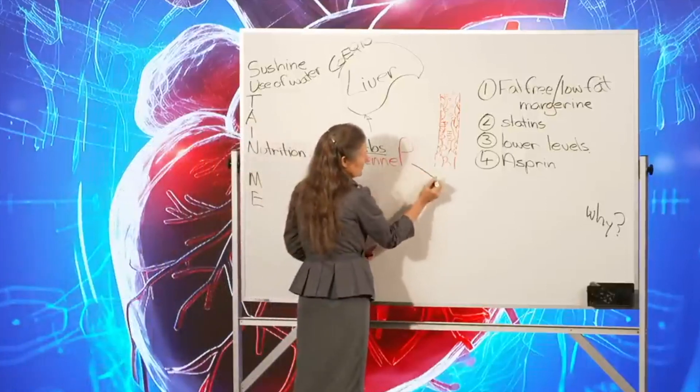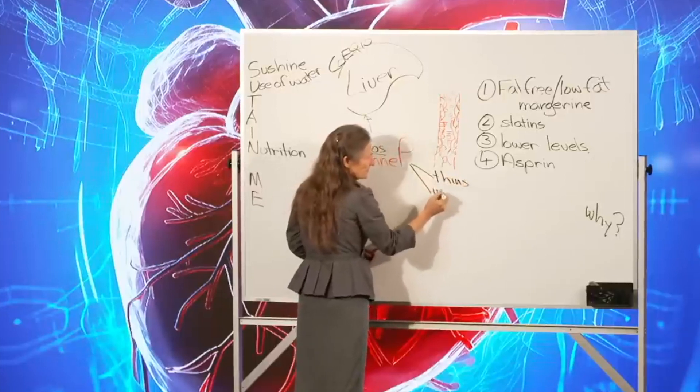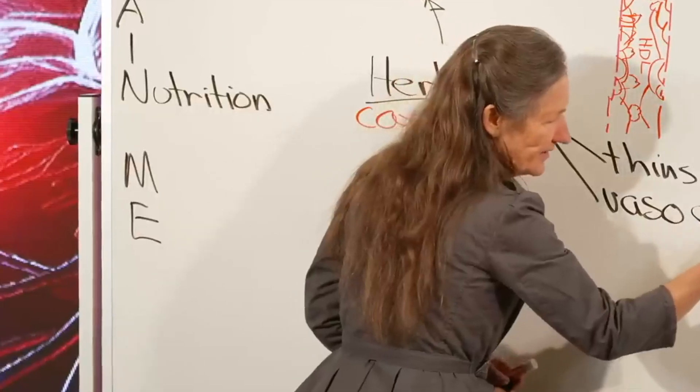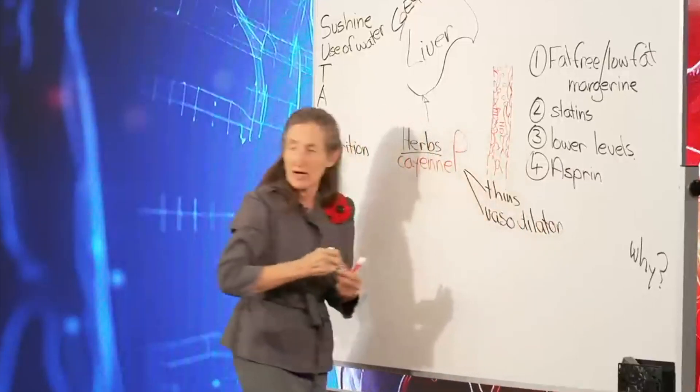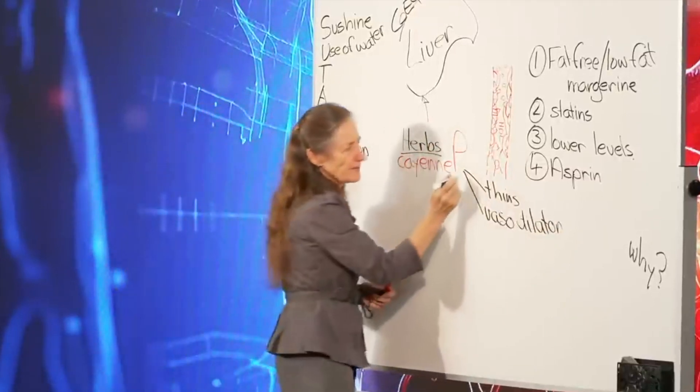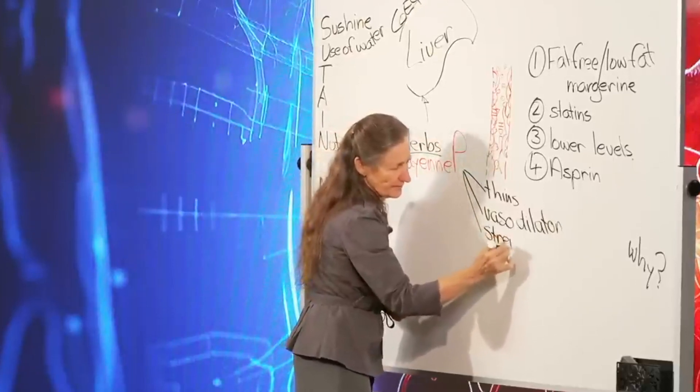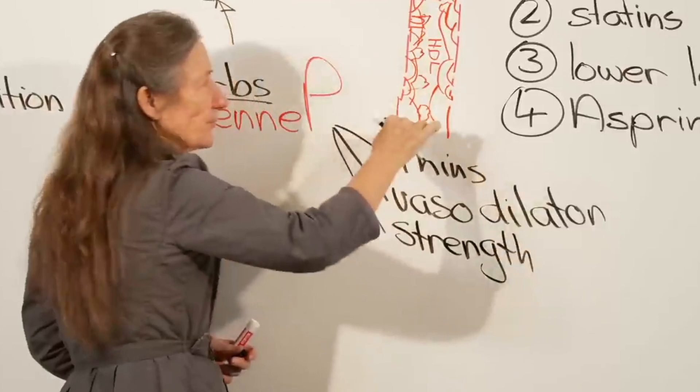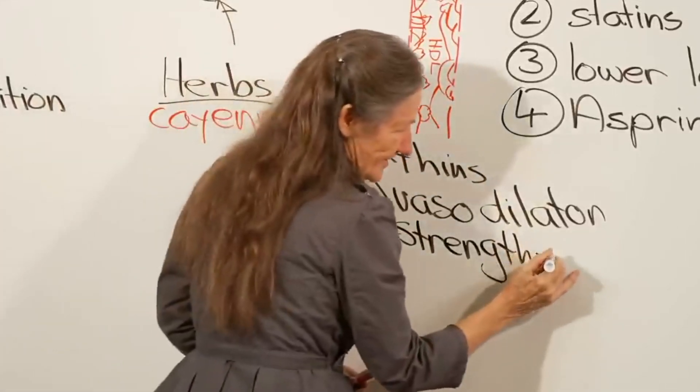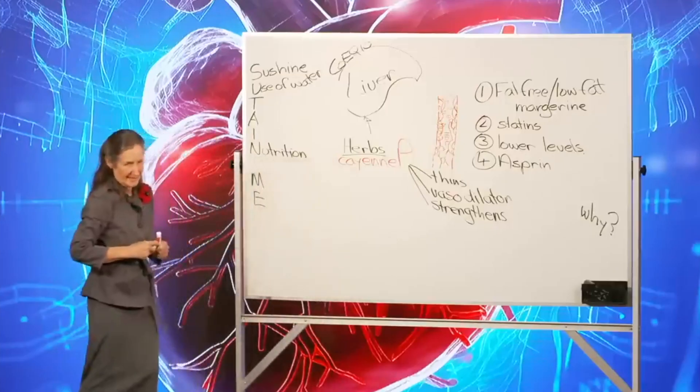I said, I would take two capsules, three times a day, of cayenne pepper. Because what cayenne pepper does is it thins the blood. Cayenne pepper also acts as a vasodilator. What's a vasodilator? A vasodilator dilates or opens the blood capillaries. And cayenne pepper also strengthens the arterial wall, which means it can help to clear out all of this debris. Isn't that good news? Can it be cleared? It can.